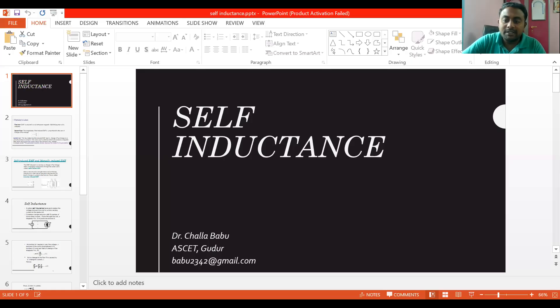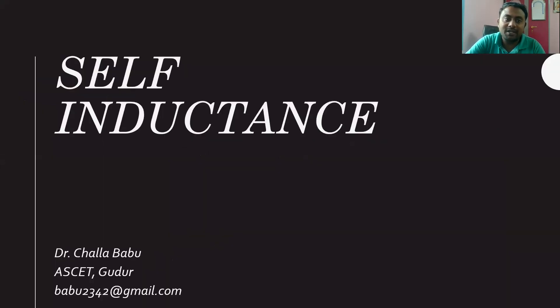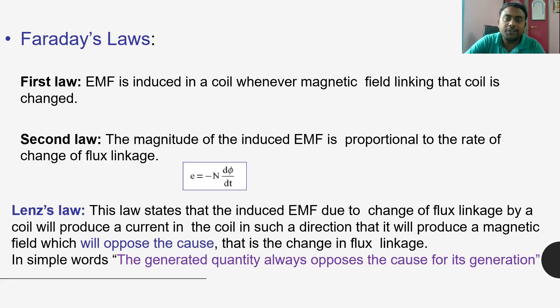Good morning, hope everybody is doing good. In our last video we discussed the basic definitions useful for magnetic circuits. In this video I am going to explain about self inductance. The main objective of the magnetic circuit is to produce magnetic flux by the coils. The element useful for that is the inductor — a conductor which is wound in the shape of a coil to produce magnetic field flux.